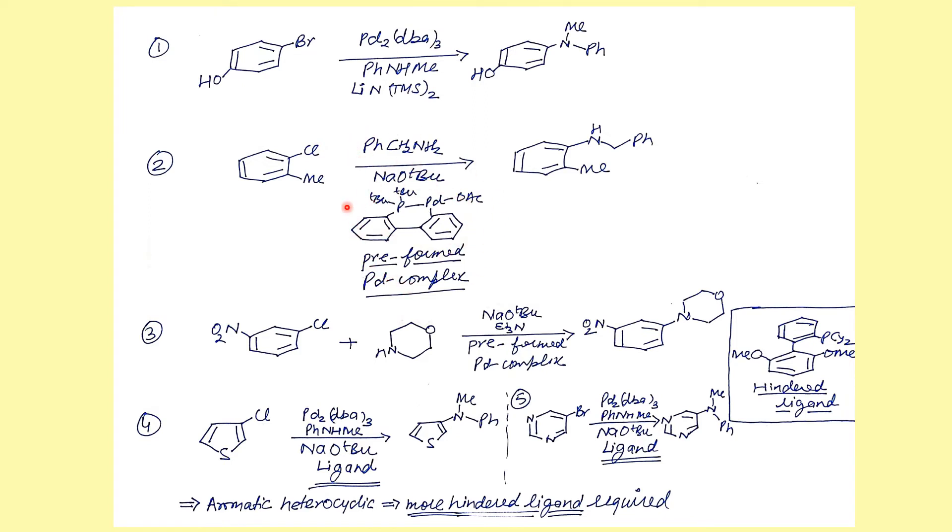You can clearly see in this case what they have used is a pre-formed palladium complex. Here you have this type of phosphine ligand and they have made this palladium catalyst which has been used in this reaction. You can do primary amine reactions, but mostly majority of reactions you can see always secondary amines are used.